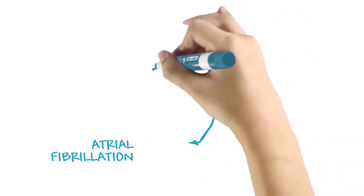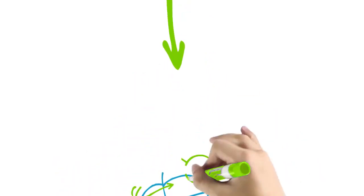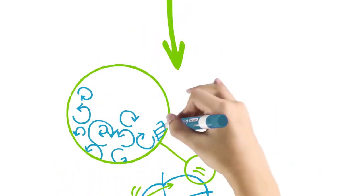Atrial fibrillation is a major risk factor for stroke because atrial fibrillation results in the heart beating abnormally. This encourages turbulent blood flow, allowing clots to form where the flow is slow or stagnant.